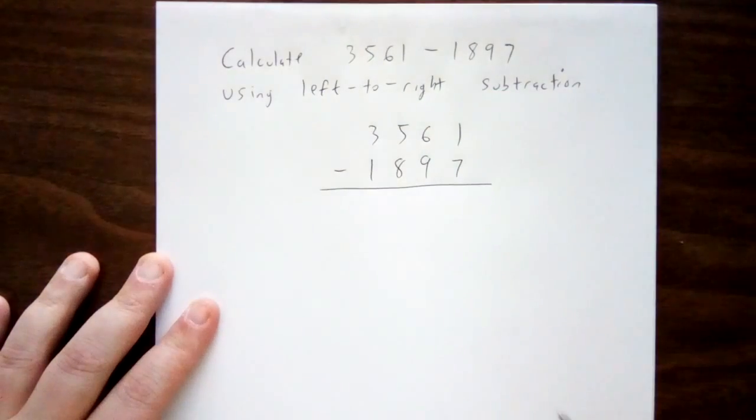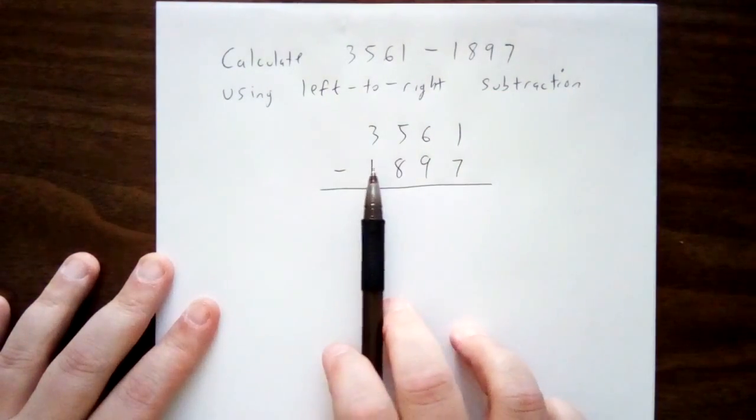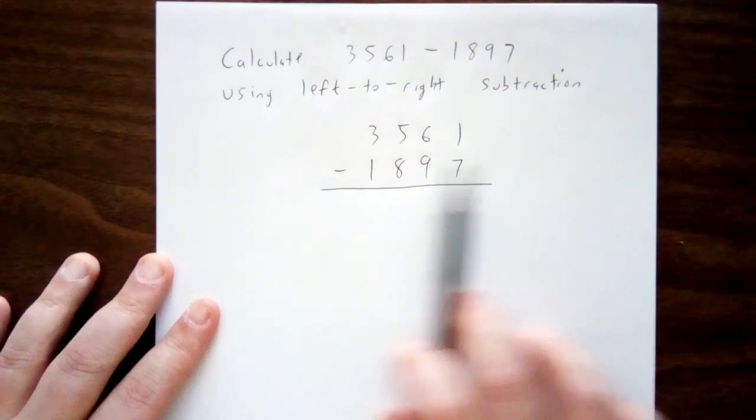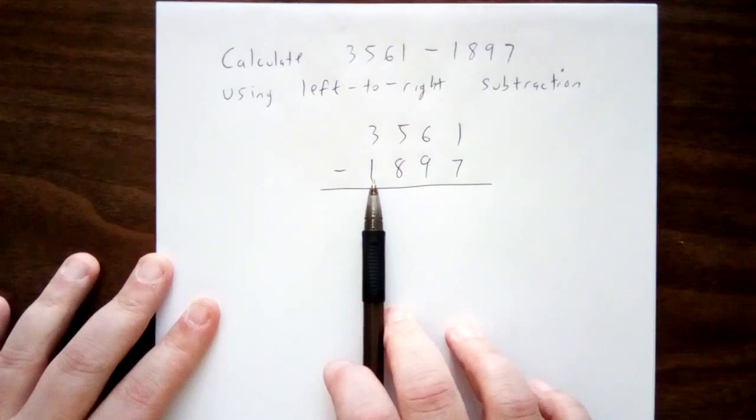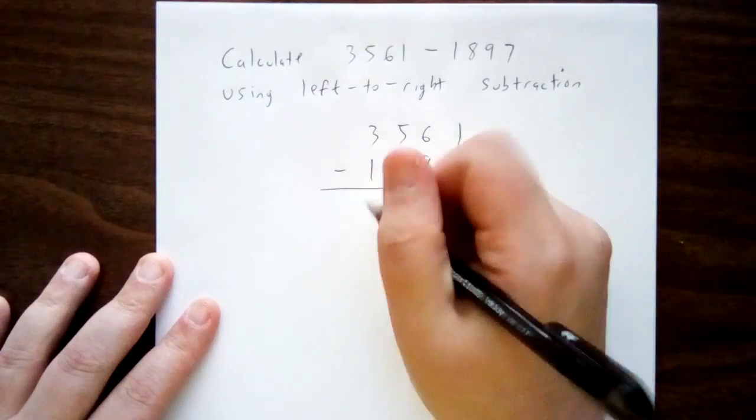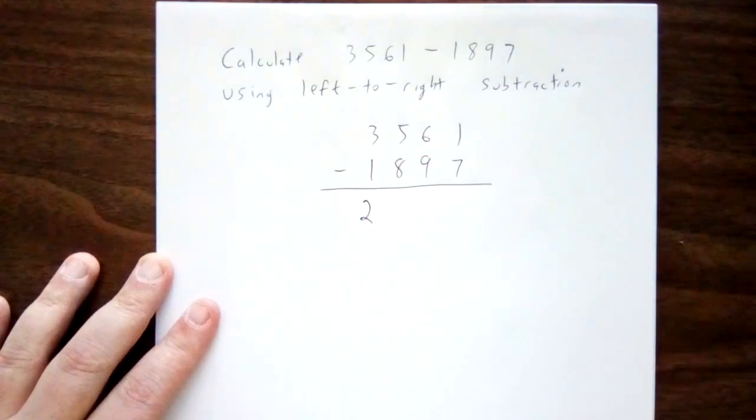The idea for this algorithm is that we'll subtract from left to right, digit by digit. So to begin with, 3,000 minus 1,000, removing 1,000 would leave 2,000 behind.